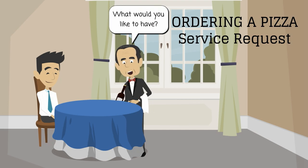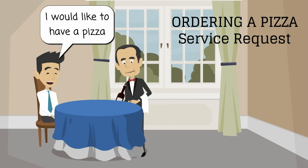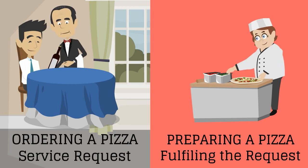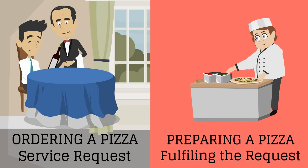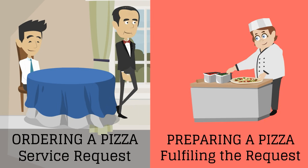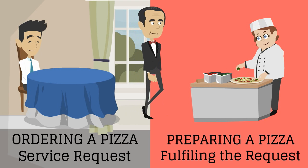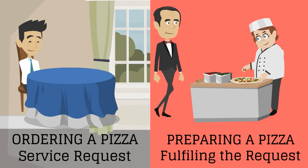For example, a waiter asks: 'What would you like to have?' The customer replies: 'I would like to have a pizza.' The waiter responds: 'We will have your pizza ready in 10 minutes.' In this example, a request was made for a pizza to be prepared. It is always a good practice to set expectation on the fulfillment timelines to the customer prior to fulfilling the request. The waiter takes the order to the chef in the kitchen, which is equal to submitting an IT service request being routed to the correct support group.